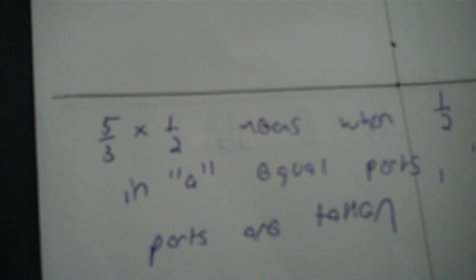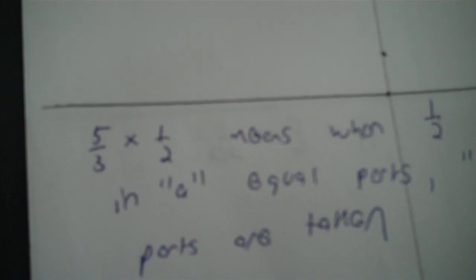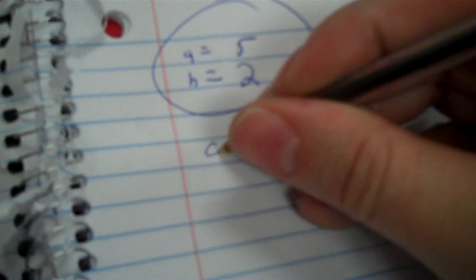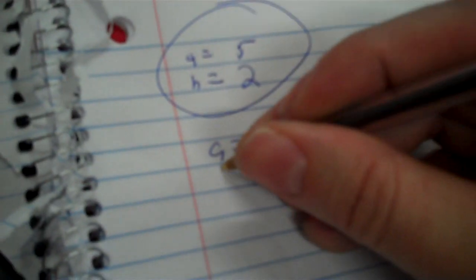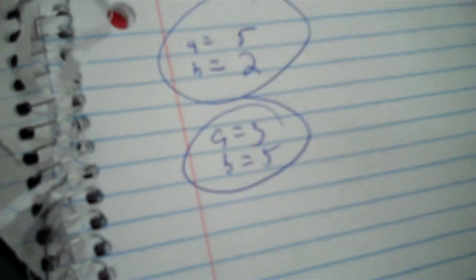5 thirds times 1 half means that when 1 half is divided into A equal parts, B of the A parts are taken. So the 1 half is being divided into 3 parts, so A equals 3, and 5 of those parts are taken. In other words, known as an improper fraction.